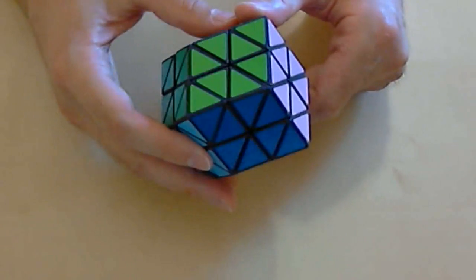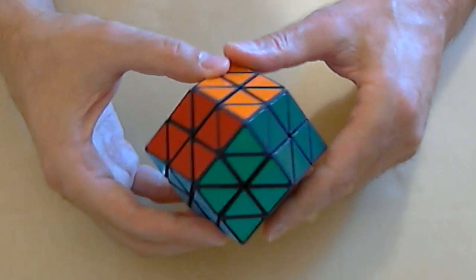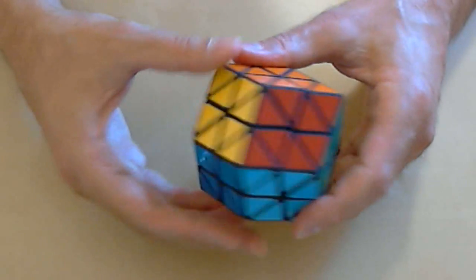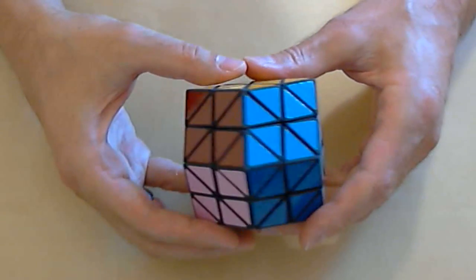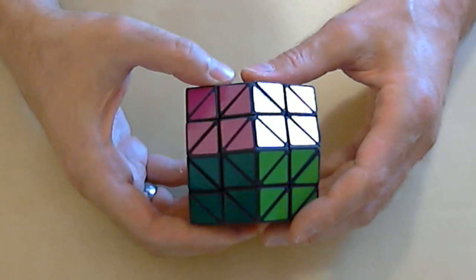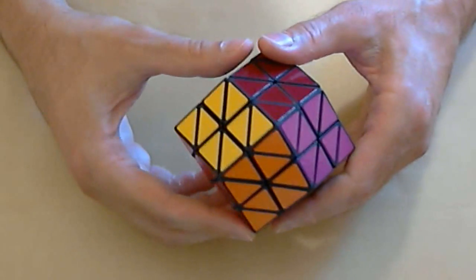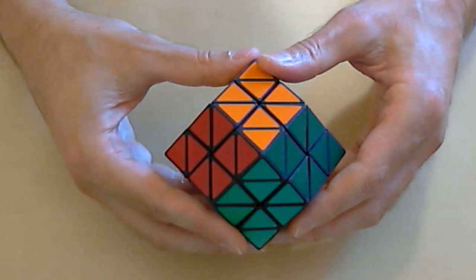Rhombic 18 is based on the geometry of the rhombic dodecahedron. However, instead of the normal 12 axes of rotation that a rhombic dodecahedron might have, rhombic 18 has 18 axes of rotation.